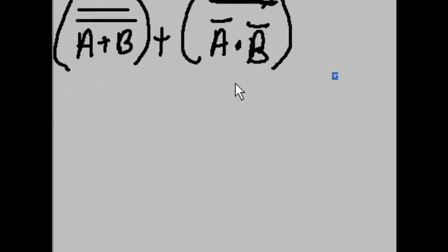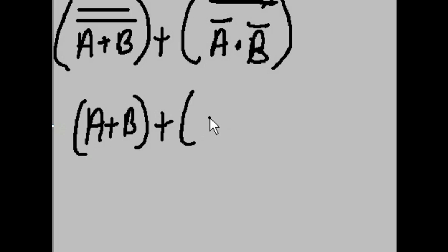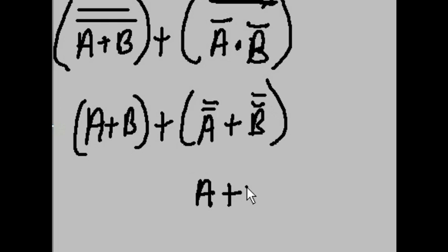Now what do we do? Well this, we have double inversions. So this comes down and becomes A or B. This splits up and becomes A0 or B0, and the two not-nots cancel out. So we have A or B, ORed with A or B.